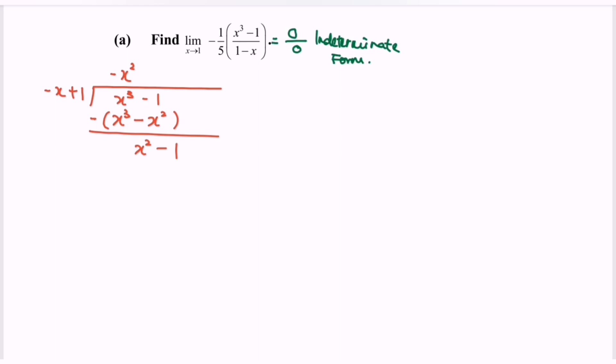Next, multiply with negative x and we will have x squared minus x. Then we will have x minus 1. Simplify and we will obtain the remainder 0.